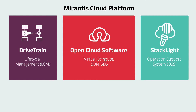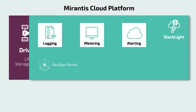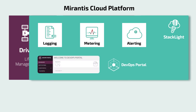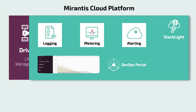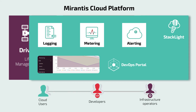MCP includes pre-integrated StackLite — a logging, metering, and alerting toolchain equipped with graphic web UIs to speed up break-fix, bottleneck elimination, and performance tuning, designed to bridge communication gaps separating cloud users, developers, and infrastructure operators.